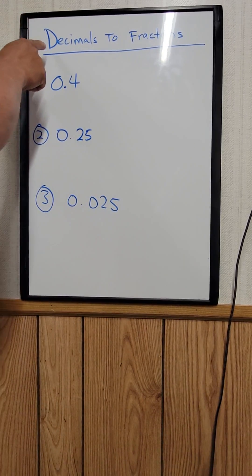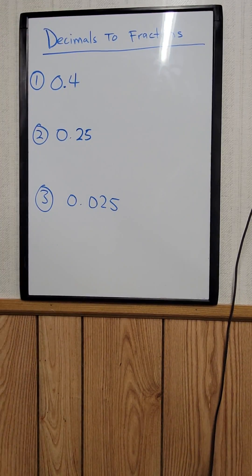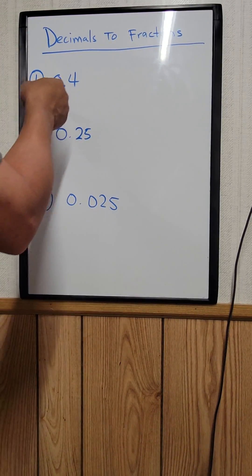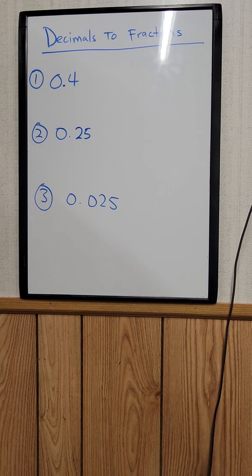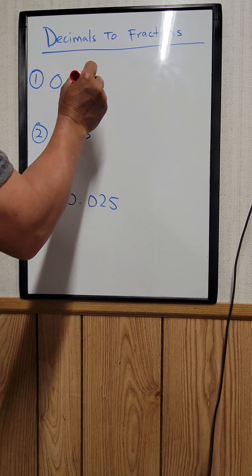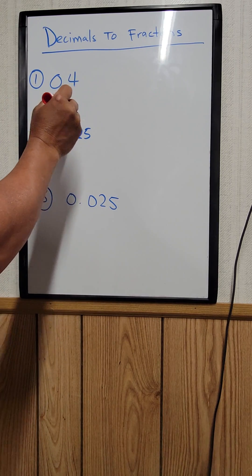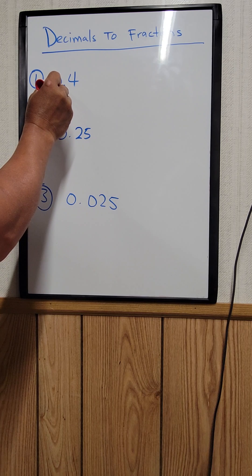How to convert decimal to fractions. Example number one is 0.4. You convert that to a fraction by moving the decimal point.